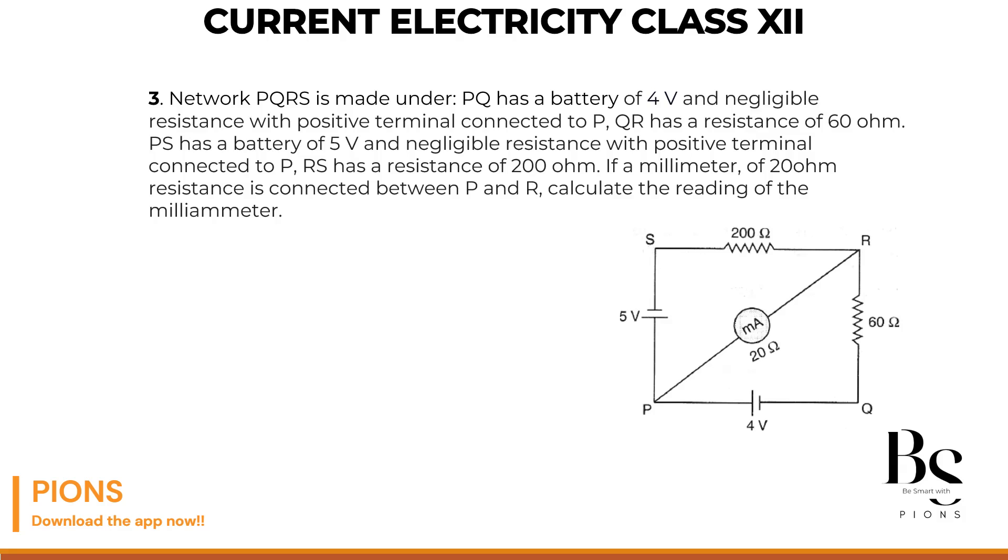P, Rs has a resistance of 200 ohm. If a milliammeter of 20 ohm resistance is connected between PR, calculate the reading of the milliammeter.